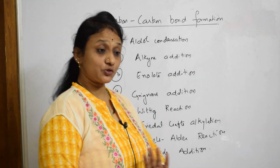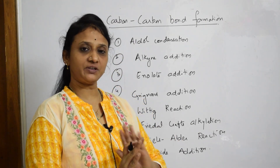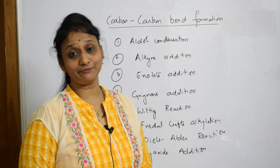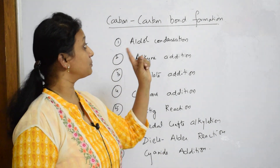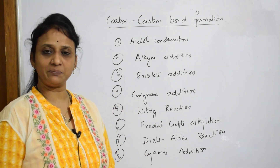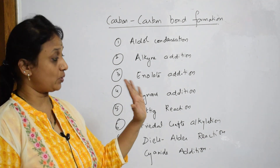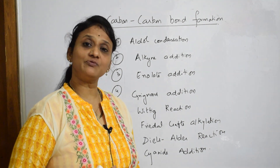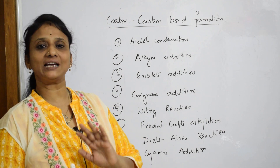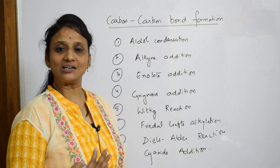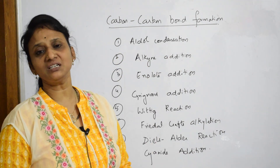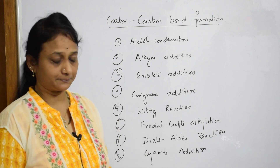Now we've come to the concept of the organic toolbox and bifurcated all reactions into three categories. Let's look at the first category — carbon-carbon bond formation reactions. I've listed a few important reactions. There are loads more, but I'm giving you an idea of how to bifurcate, so you can take your organic chemistry book and categorize further.